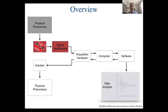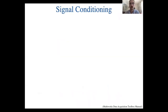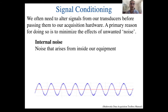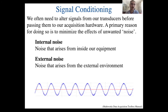Now we're at the point where we have used a transducer — the sensor — to go from some physical phenomenon to an electrical signal, which in many cases is a voltage. The next step is what we call signal conditioning, where we might decide to alter our signal before sending it to our acquisition hardware. More times than not, the reason for signal conditioning is to remove noise. Noise can come from different sources — internal noise from inside our equipment, or more commonly noise from external sources, such as 60 Hz from incandescent lights or 120 Hz from fluorescent lights.